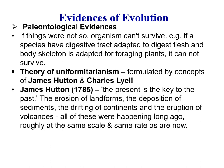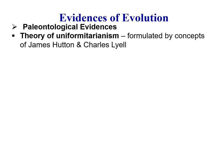Then there is the theory of uniformitarianism, formulated by James Hutton and Charles Lyell. James Hutton says that the present is the key to the past. The erosion of landforms, the deposition of sediments, the drifting of continents, and the eruption of volcanoes were all happening long ago at roughly the same scale and rate as they are now. According to him, evolution is a uniform process — the forces acting now were also acting in the past, and organisms gradually evolve into new forms.